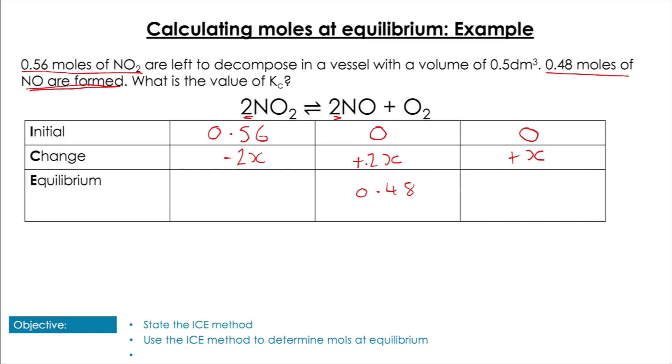For NO, we have all the components, so we can set up a simple equation and solve for X. We have 0 + 2X = 0.48, so solving for X we get 0.24.